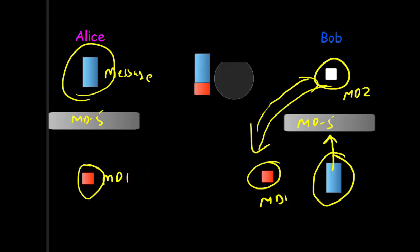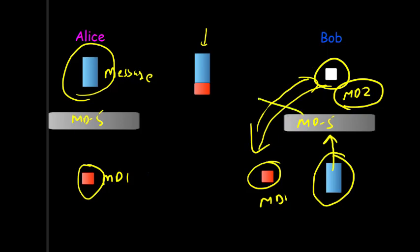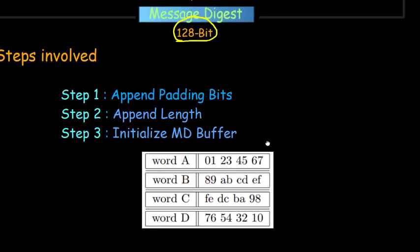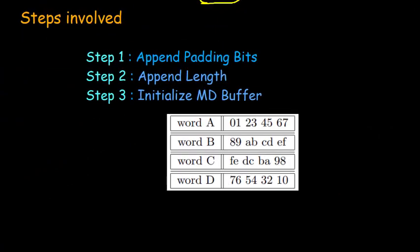If there is no change in the message, the message digest calculated by Bob will be the same as Alice's. But if even a single alphabet is changed by an attacker and Bob calculates the message digest and gets MD2, then MD2 will not be equal to MD1, and Bob will conclude that the message has been changed.